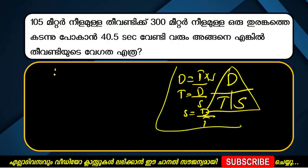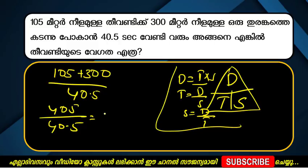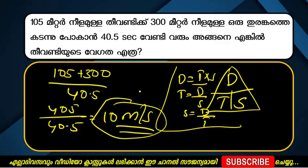If you go to a distance of 105 meters — it is a distance — divided by 50.5. Our answer is 10 meters. You can see 10 meters.